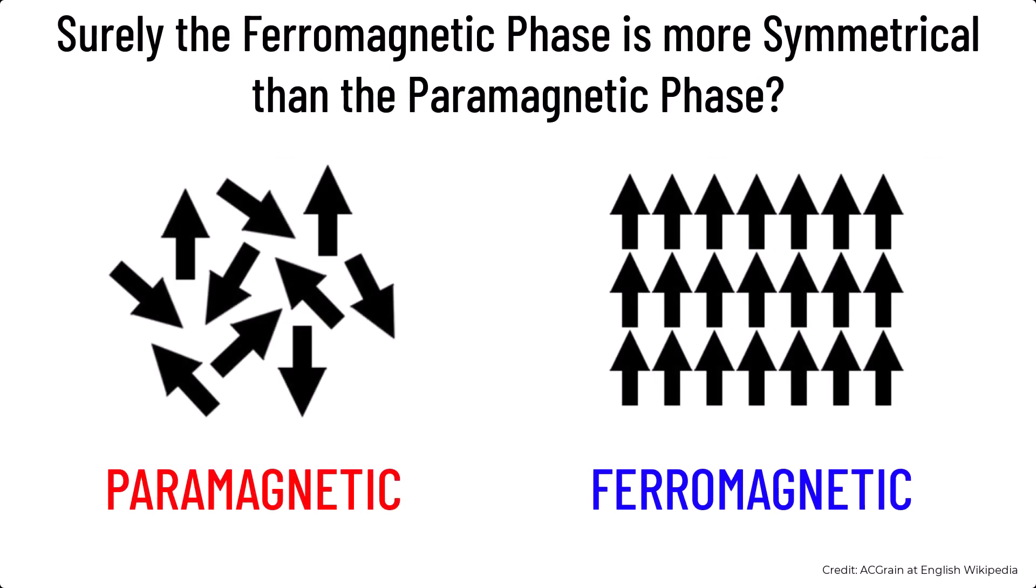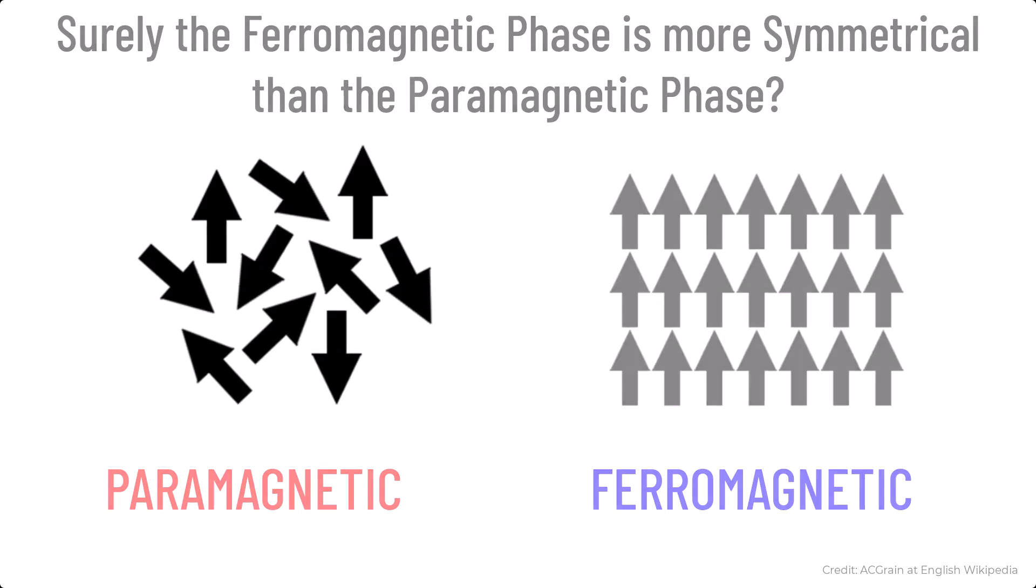But hold up, wait a moment. You may be thinking that the ferromagnetic phase is more symmetric than the paramagnetic phase. Intuitively, that would make sense, right? If all the spins are aligned, as in the case in ferromagnetism, then this looks more symmetric than in paramagnetism when they're all over the place. However, you would be incorrect.